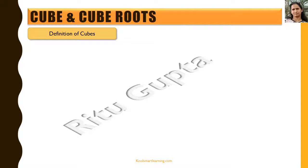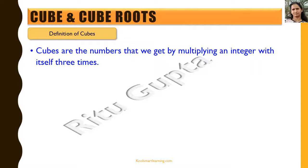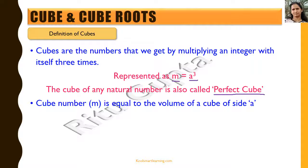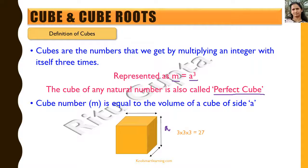Hello friends, we'll be talking about cubes and cube roots in this session. Cubes are the numbers we get by multiplying an integer with itself three times. We represent it as m = a³, meaning a multiplied by a multiplied by a. The cube of any natural number is also called a perfect cube. A cube number equals the volume of a three-dimensional cube with side a.